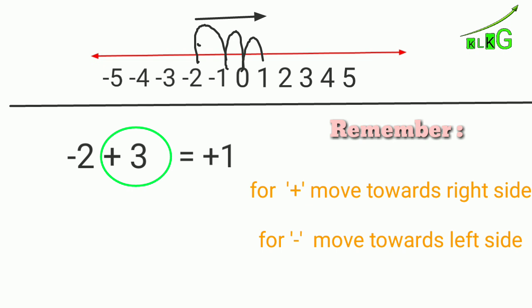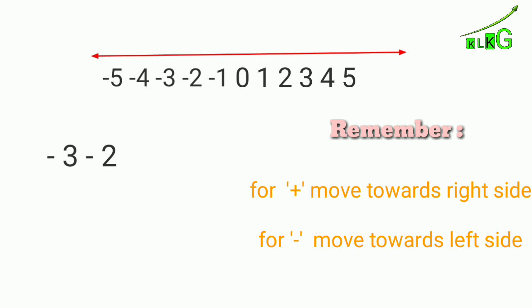One more example: minus 3 minus 2. It means you have to move two steps left side. From minus 3, minus 4 and minus 5. So minus 3 minus 2 is minus 5. This is the example on a number line which we normally do in a notebook, but here I am going to show the project.